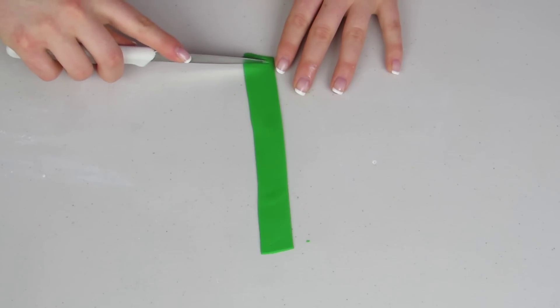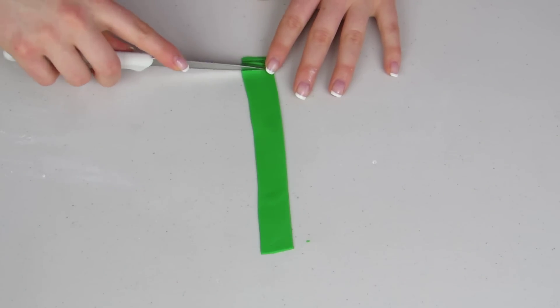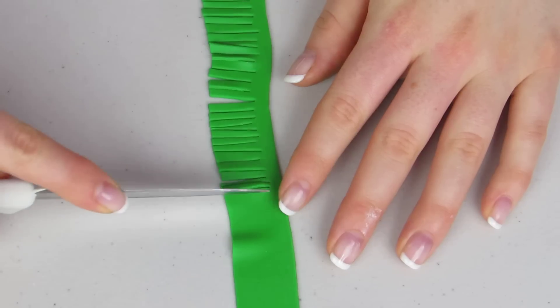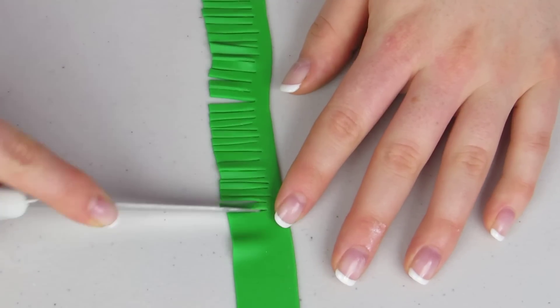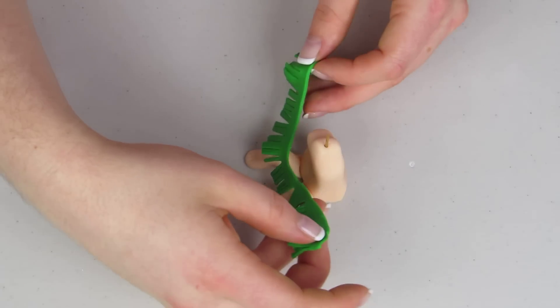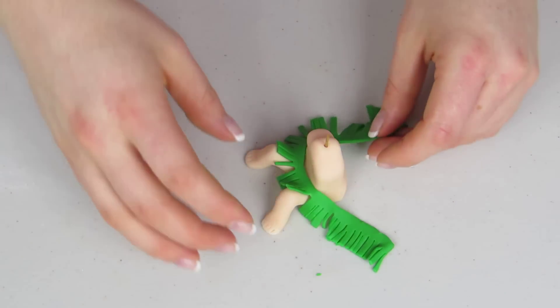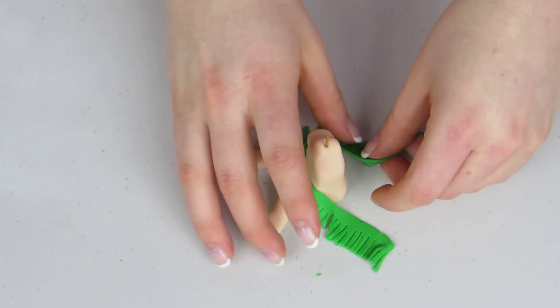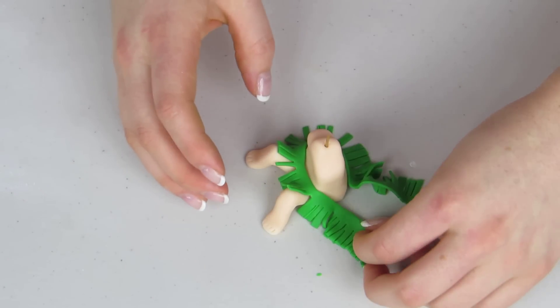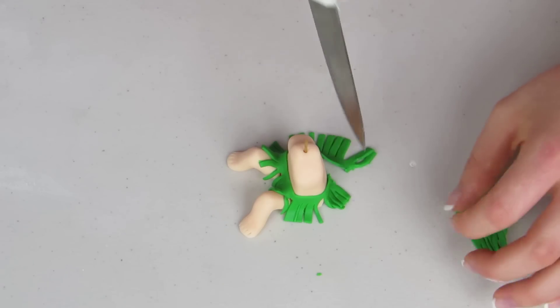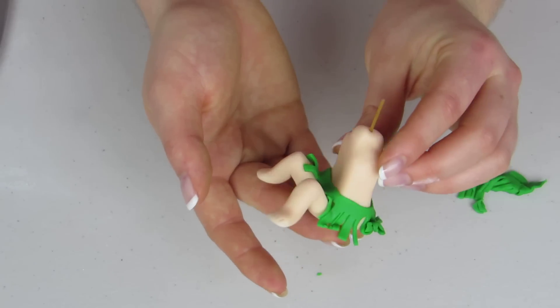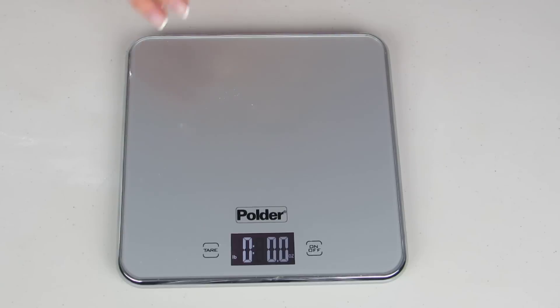Now for his little grass skirt I'm gonna use some green fondant and I'm just slicing down with my knife to kind of make this grassy type shape. And I'm gonna wrap that around my figurine. And there you go. That's what he looks like so far.